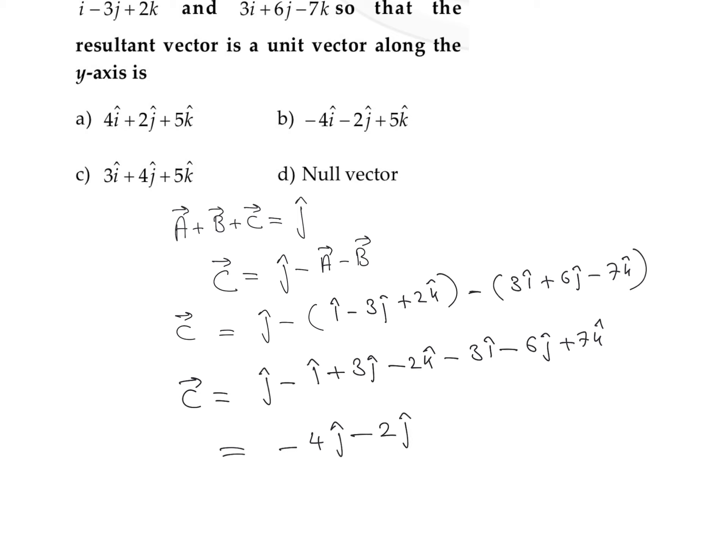Now we can observe the k component. K component is minus 2 and this is plus 7, so that is plus 5k cap. So this will be the value of C vector.